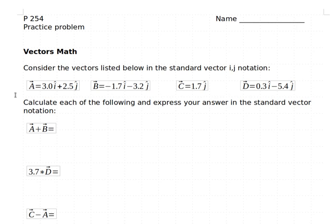We're going to take this one step at a time though. So we're going to start with this first one, A plus B vector, and I've got 3.0 i-hat plus 2.5 j-hat minus 1.7 i-hat minus 3.2 j-hat.